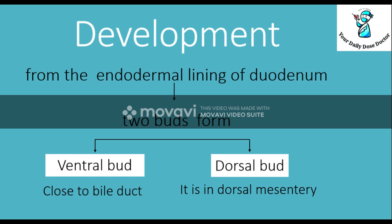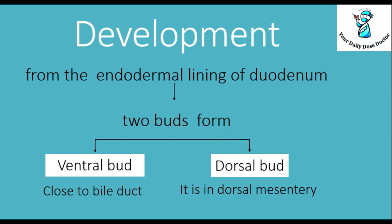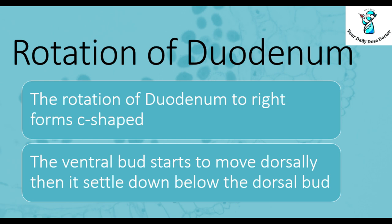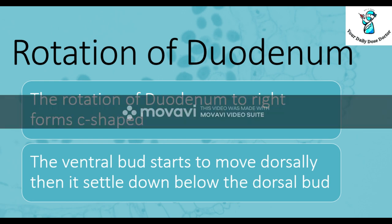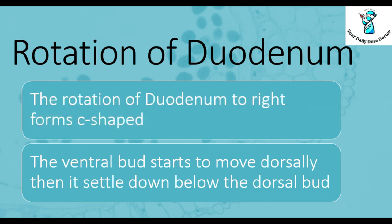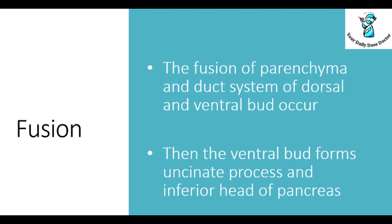The ventral bud lies close to the bile duct, while the dorsal bud lies in the dorsal mesentery. With the rotation of the duodenum to the right side, it forms a C-shape. Then the ventral bud starts to move dorsally and settles down just below the dorsal bud.